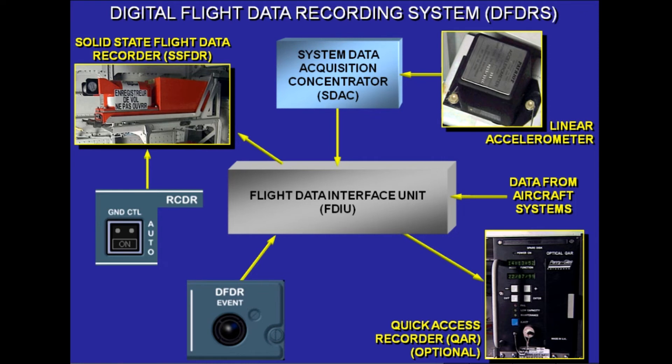The operation of the SSFDR is automatic. On the overhead panel, there is a ground control push button located on the recorder panel. This push button enables the SSFDR to be supplied when the aircraft is on the ground for pre-flight check, before engine start, or for test and maintenance purposes. On the center pedestal, there is a DFDR event push button, which can be used to set an event mark on the SSFDR memory.